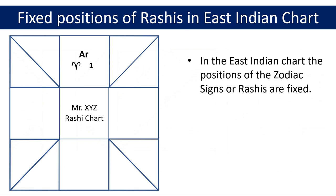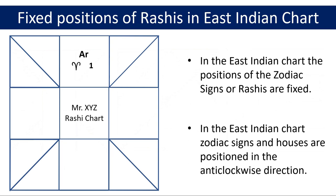As I have explained in my video about zodiac signs or Rashis, the zodiac signs have a fixed order, and zodiac sign Taurus or Rishabha comes after Aries or Mesha in that fixed order. The zodiac signs or Rashis and houses are positioned in the East Indian chart in the anticlockwise direction. Therefore, moving anticlockwise in the direction of the arrow, the next sign Taurus or Rishabha, shown by the two-letter abbreviation TA, will be in the triangle next to the square containing Aries or Mesha. The Taurus sign could also be represented with the zodiac symbol for Taurus or number two in the chart. Remember that the position of Taurus or Rishabha will always be in this triangle in any East Indian chart.